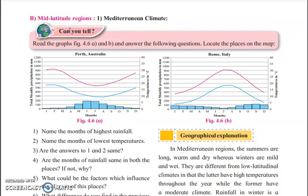Hello students. In this video we are going to study about mid-latitudinal region. We have already studied about the low-latitudinal region. Under low-latitudinal region, we have the range — the location from the equator to 10 to 20 degrees north and south, from both sides, meaning 0 to 10 in north and 0 to 10 in south. That much area is covered by low-latitudinal regions.